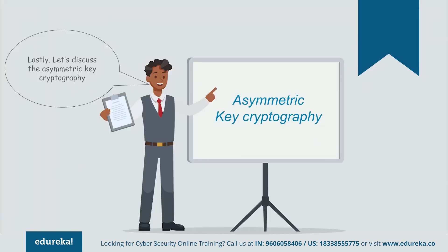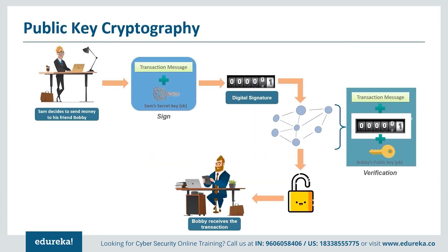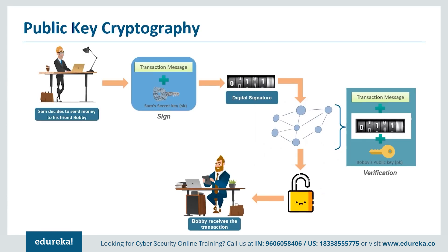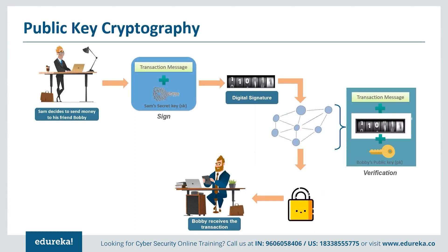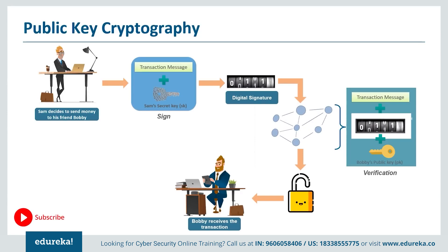Asymmetric cryptography, also known as public key cryptography, uses a pair of keys: a public key which may be widely distributed, and a private key known only to the owner. This accomplishes two functions — authentication, where the public key verifies that the holder of the paired private key sent the message, and encryption, where only the paired private key holder can decrypt a message encrypted with the public key. The strength of a public key cryptographic system relies on the computational difficulty of finding the private key from its paired public key.